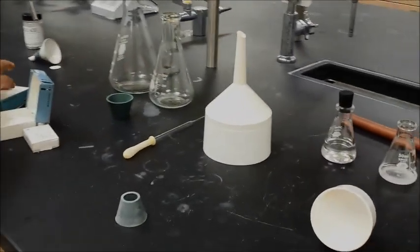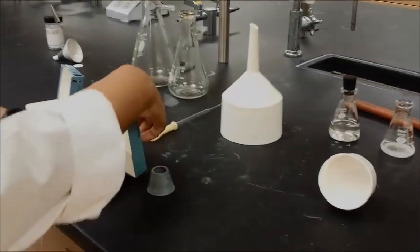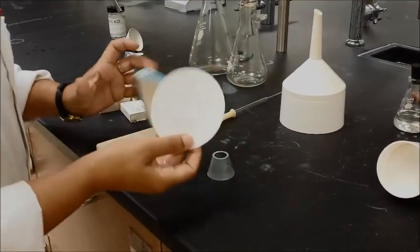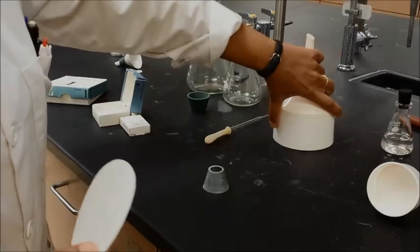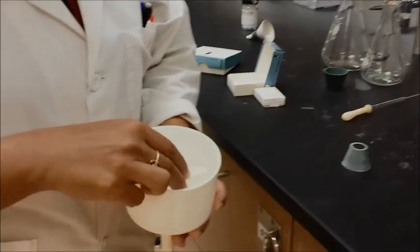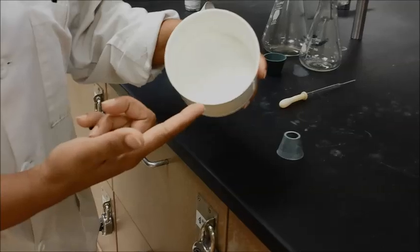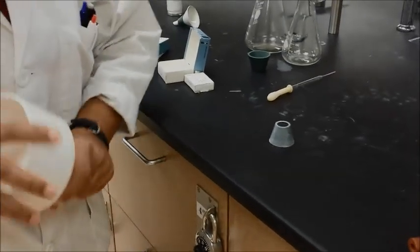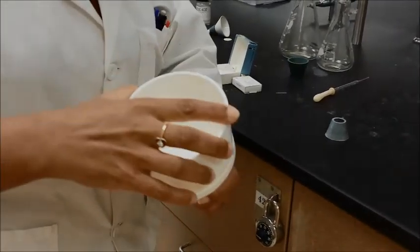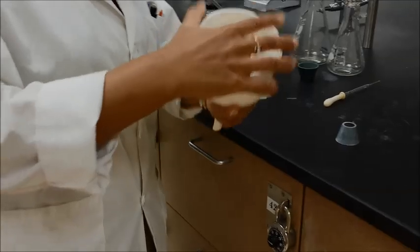If you have a larger Buchner funnel, then you need to get a larger filter paper. That one was 5.5, this one is a 9 centimeter size Buchner funnel. So now, again, you need a filter paper that will cover all the holes in there. And this one also separates out, so be very careful when you're placing it in the filter flask and removing it from there.